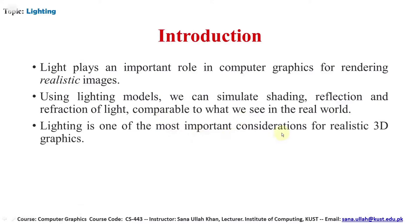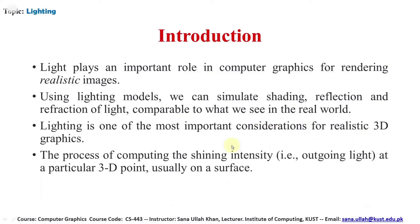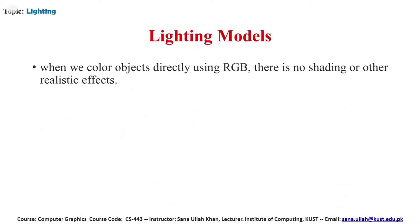Lighting is one of the most important considerations for realistic 3D graphics — it is used not only in 2D graphics but also in 3D graphics effects. The process of computing the shading intensity, i.e., outgoing light at a particular 3D point usually on a surface, is where lighting is important. Lighting is divided into different models; sometimes we use RGB color to give color to an object directly.